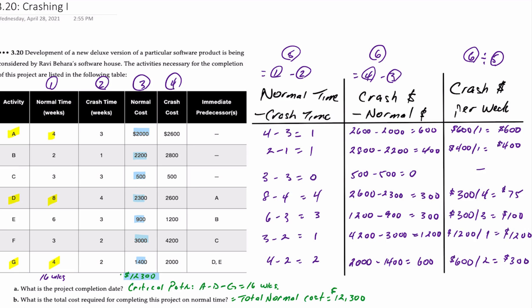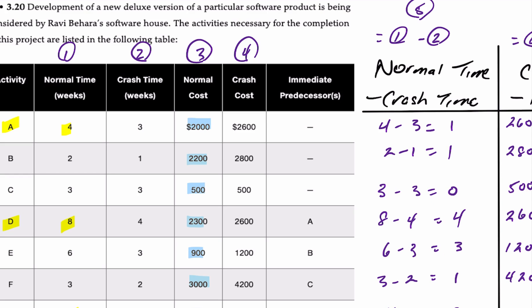We've been given a set of seven activities along with their normal time, and we're also presented with the crash time. The crash time represents the absolute minimum amount of time the activity can take. We're also presented with the normal cost — for example, activity A takes four weeks at a cost of $2,000. The crash cost is the cost to complete the activity in the reduced time, so if activity A were completed in three weeks that would cost $2,600. We're also provided with the immediate predecessors for all the tasks.